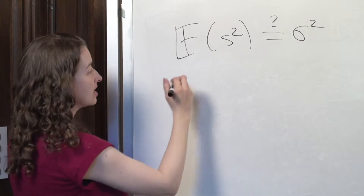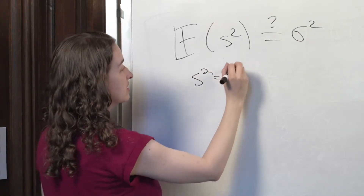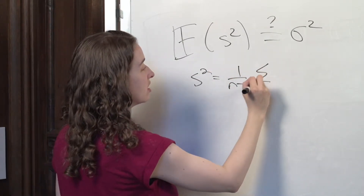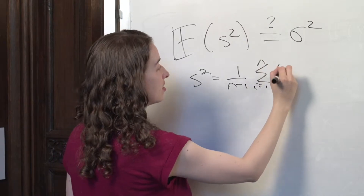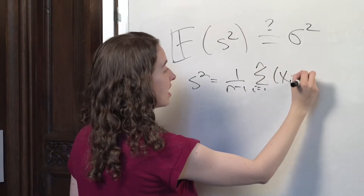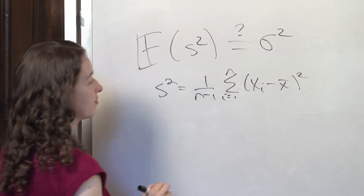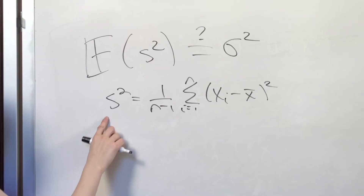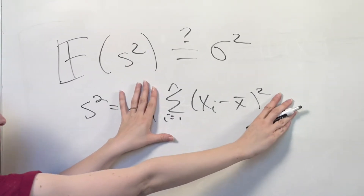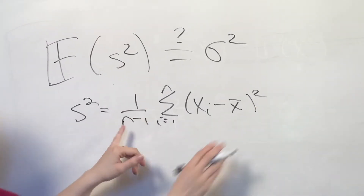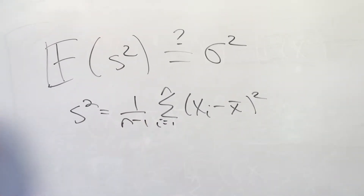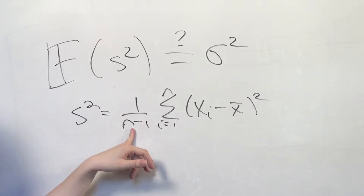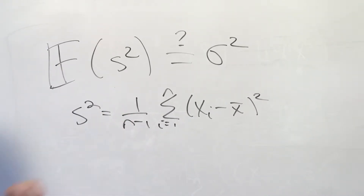Remember that s squared is equal to 1 over m-1 times the sum over the sample of (xᵢ minus x-bar) squared. So first we'll focus on taking the expectation of this summation, and then afterward we'll put in that m-1. We know that m-1 won't be a problem because of the linearity of expectation.